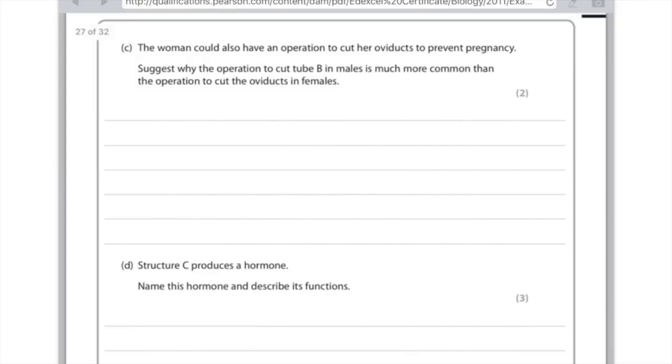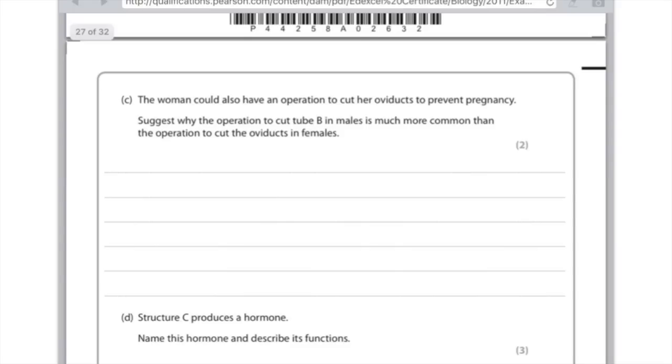C, the woman could also have an operation to cut her oviducts to prevent pregnancy. Remember the oviducts connect the ovaries to the uterus. Suggest why the operation to cut tube B in males is more common than that to cut the oviducts in females. So the reason is because in tube B in the males it's only sitting in the scrotum so it's far less invasive than trying to tie off the oviducts which obviously sit far more in the interior of a woman. And so you can say first of all for the first mark that the testes are effectively outside whereas the ovaries are inside. Therefore in the testes operation you can use local anaesthetics so it's not a major procedure whereas for a woman she'd have to have a general anaesthetic. And apparently it's easier to reverse the operation if you use the snipping of the sperm duct compared with snipping of the oviduct.